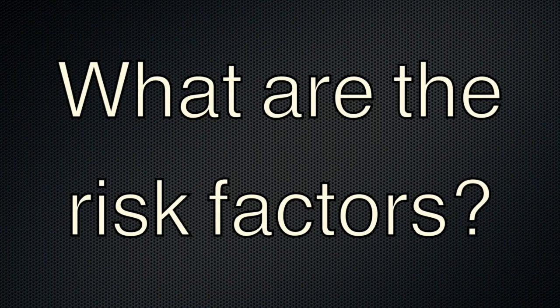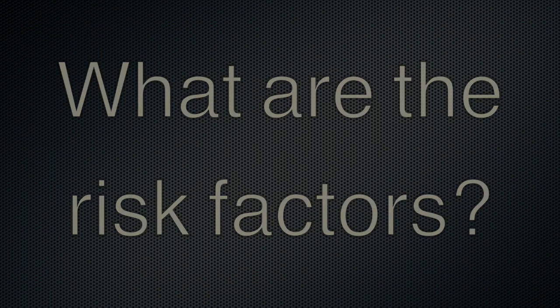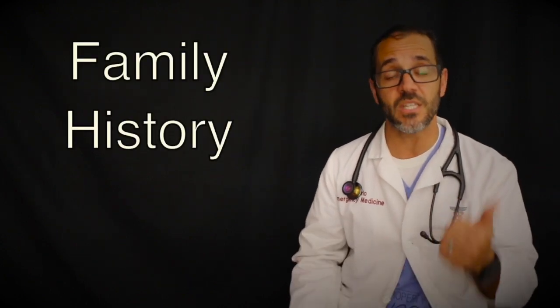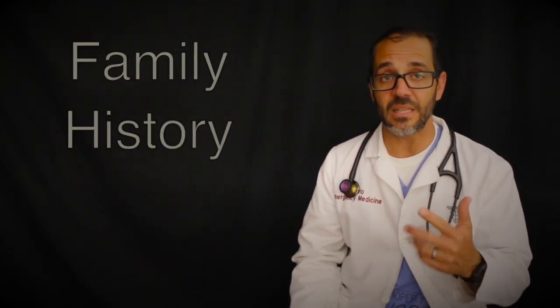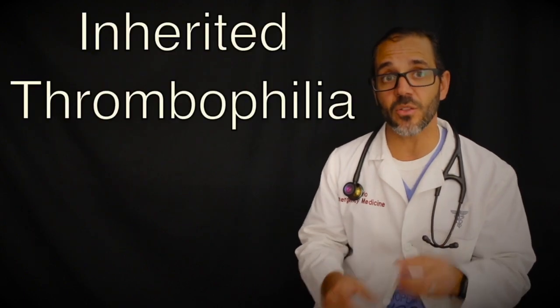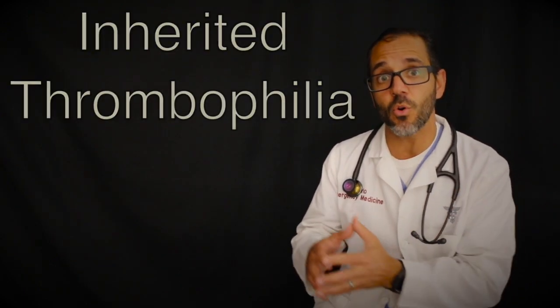So deep vein thrombosis and risk factors. If a person is found to have a DVT and there is no known medical condition or recent surgery that could explain why the DVT happened, it is possible that an inherited or congenital condition is to blame. This is especially true in people who have a family history of DVT or PE. In these cases testing for inherited thrombophilia, a genetic problem that can lead to more clots, may be recommended.